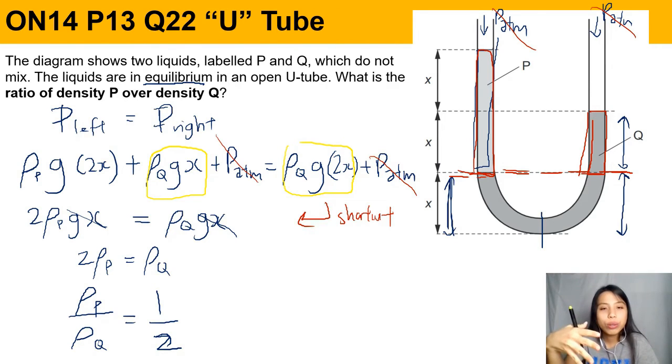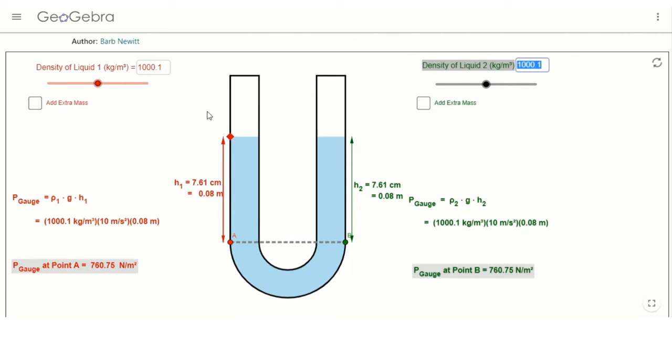So U-tubes don't just stand there like 'how to find density, what?' Just write out all the pressures—pressure on the left equals to pressure on the right.